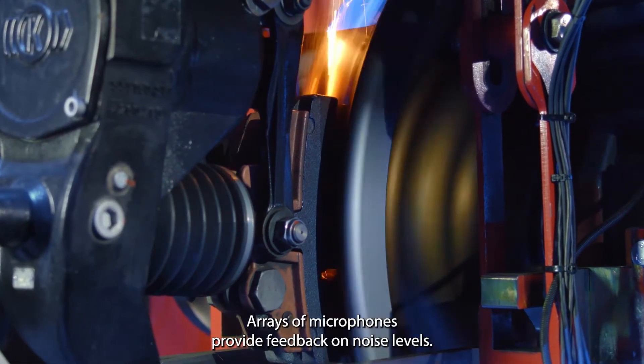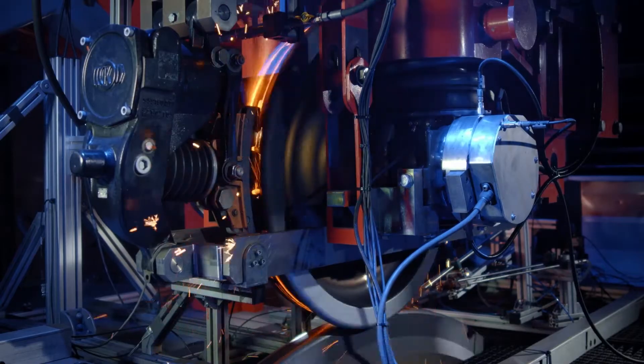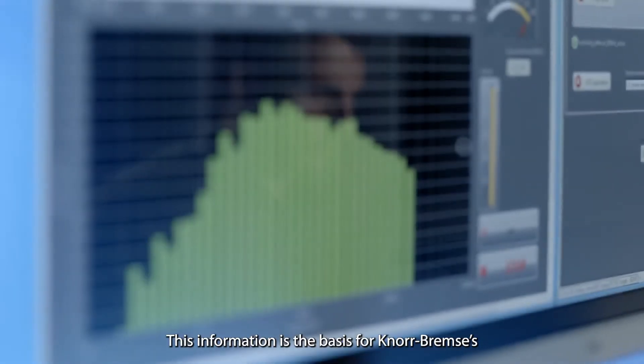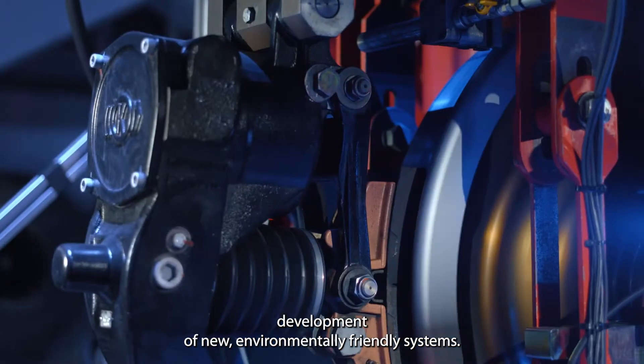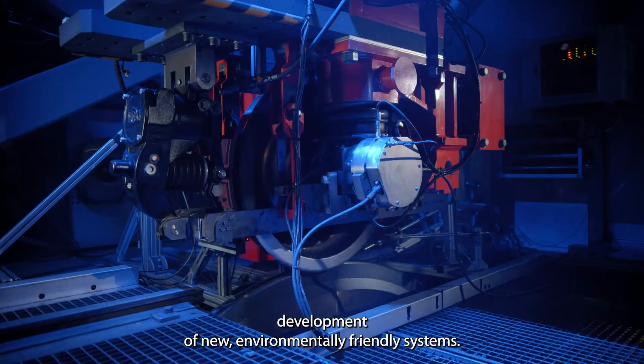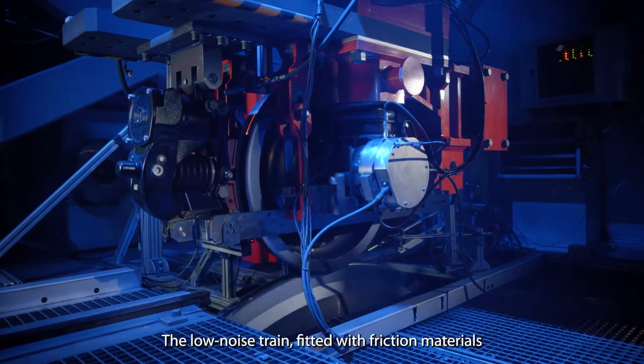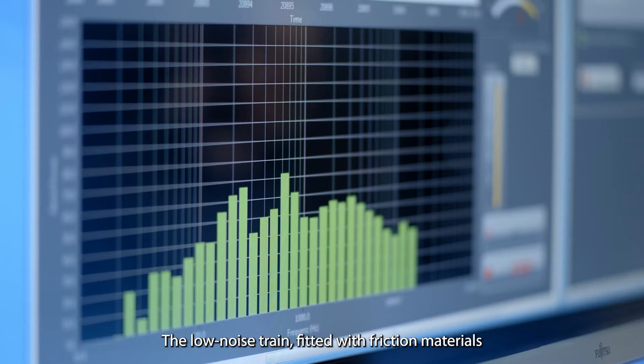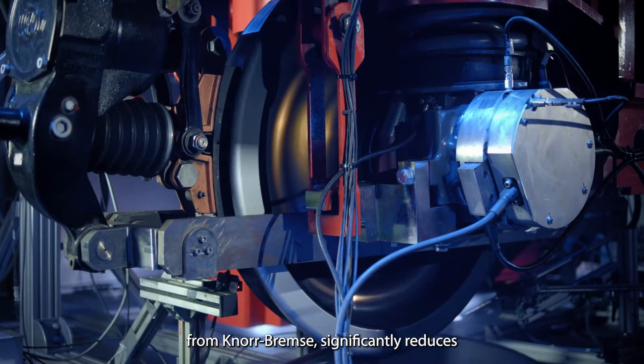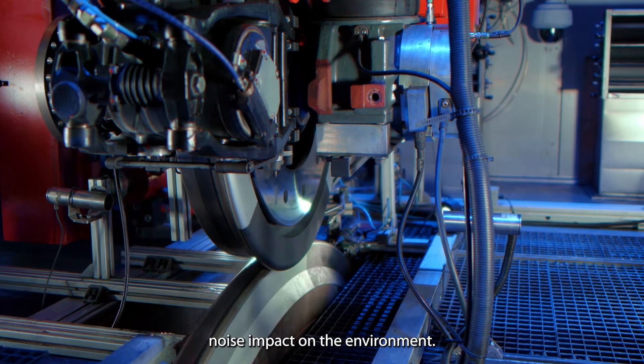Arrays of microphones provide feedback on noise levels. This information is the basis for Knorr Bremse's development of new environmentally friendly systems. The low noise train fitted with friction materials from Knorr Bremse significantly reduces noise impact on the environment.